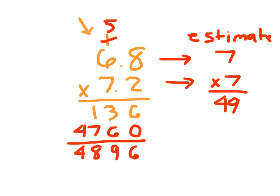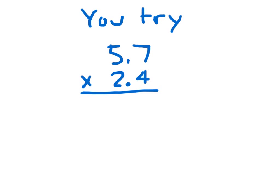We still have to place a decimal point. Our answer should be around 49, so the decimal point goes right here between the 8 and the 9, giving 48.96. Another way to look at this: there is one decimal place in 6.8 and one decimal place in 7.2, so there are two decimal places total in our product, meaning there are two decimal places in our answer. Now you're ready to try one.